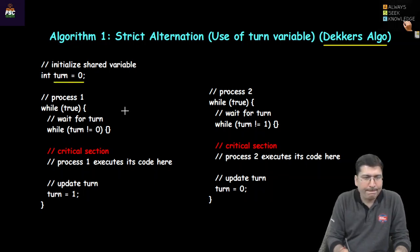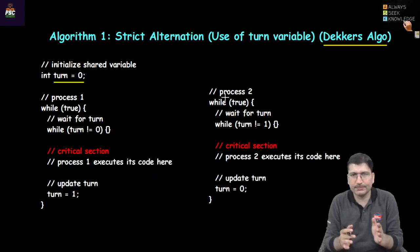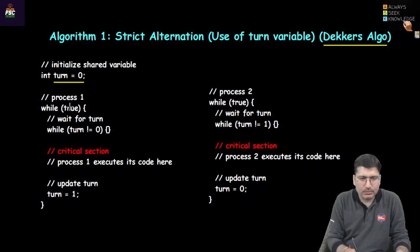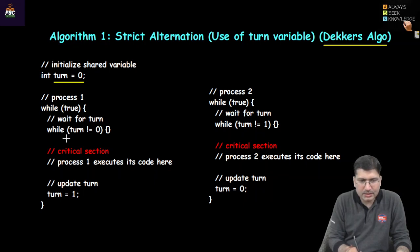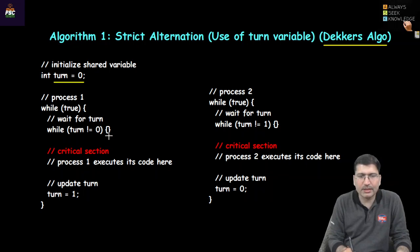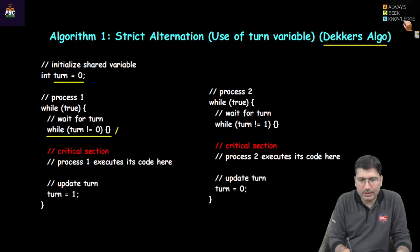This is a shared variable. Process 1 executes this code and process 2 executes this code; both are concurrent processes. There is a while loop that keeps on running continuously. It checks whether TURN is not equal to 0. If TURN is not equal to 0, this condition becomes true and the while loop keeps executing. The body of the while loop does not contain anything — it is a do-nothing loop.